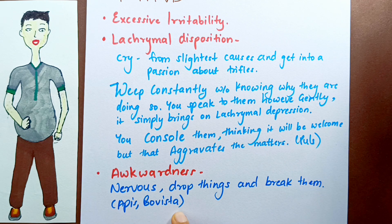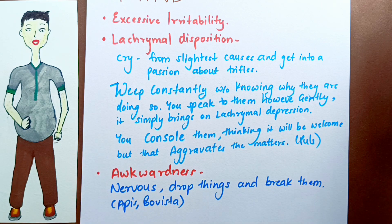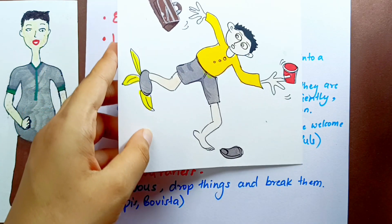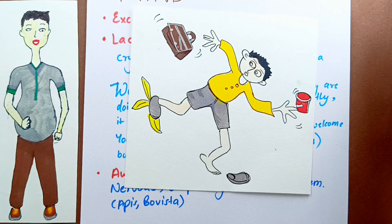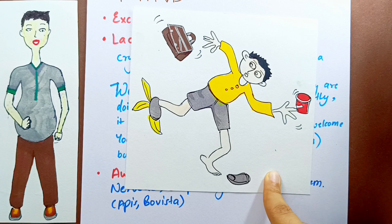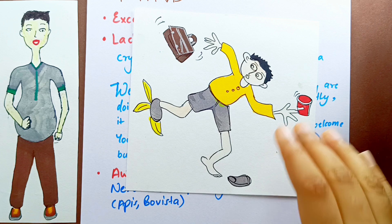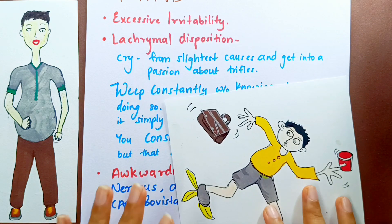Awkwardness also characterizes all the movements of Natrium Muriaticum patients — like Apis and Bovista, they are nervous, drop things, and break things. This awkwardness is also seen in Apis, Bovista, and Capsicum.